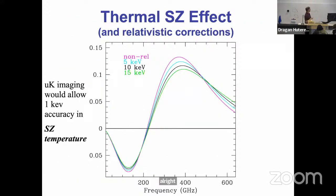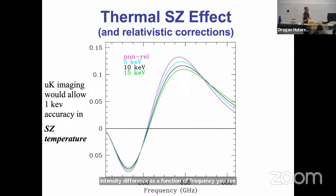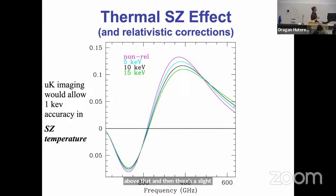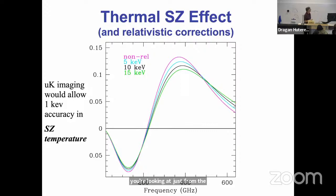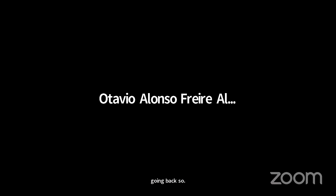So this is what I mean: there's some decrement down here. This is the intensity difference as a function of frequency. You see there's a hole in the sky at frequencies below about 217 GHz, and an excess at frequencies above that. There's a slight dependence on exactly what temperature of the gas you're looking at, from the relativistic corrections. That's how you would find this — you just look for basically a hole in the CMB.